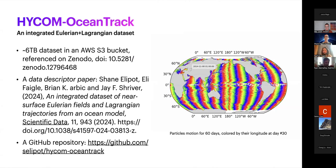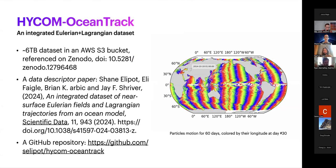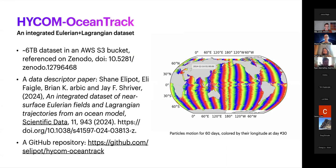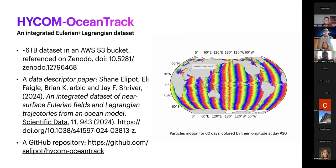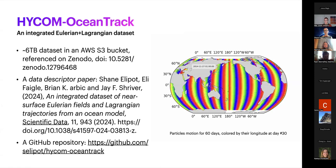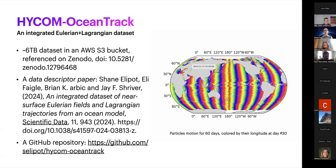To describe this dataset in detail, we wrote a data descriptor paper published in the journal Scientific Data, called 'An integrated dataset of near-surface Eulerian fields and Lagrangian trajectories from an ocean model.' Interestingly, the editor suggested I not use the dataset name in the title, preferring a more descriptive title. Associated with this paper is a GitHub repository holding example code used to generate the dataset as well as Python notebook examples on how to get started and analyze the data.